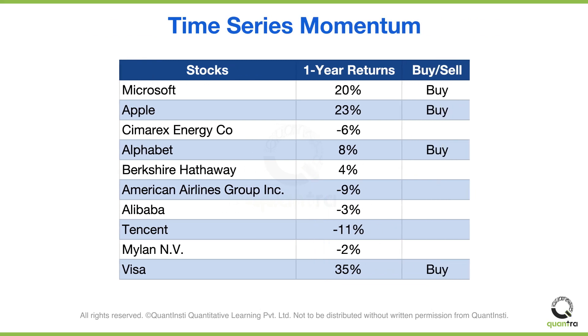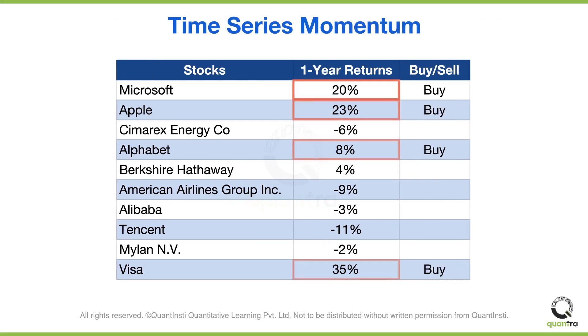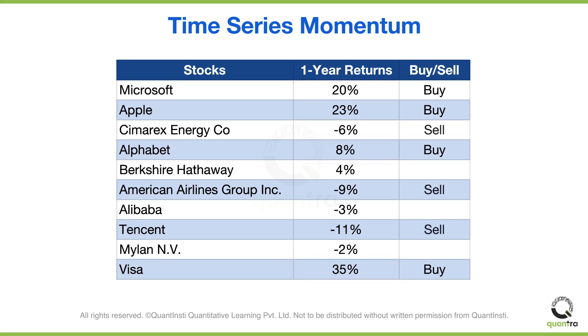In time series momentum, you buy the stocks that have returns above a certain level, say 5% over one year. You sell the stocks that have returns below a certain level, say minus 5% over one year.